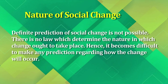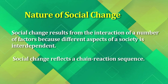The definite prediction of social change is not always possible. There is no law which can determine the nature in which the change ought to take place, making it very difficult to predict how change will occur. Social change results from an interaction of a number of factors because different aspects of society are interdependent, and therefore it reflects a chain reaction sequence.